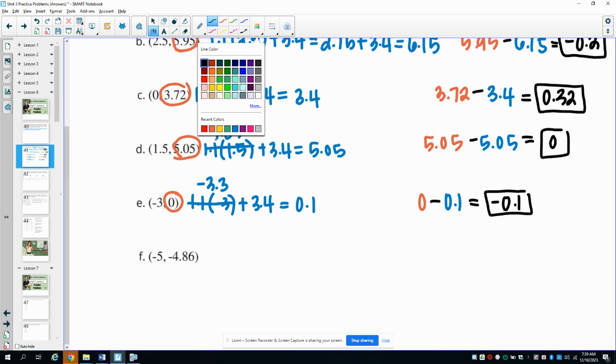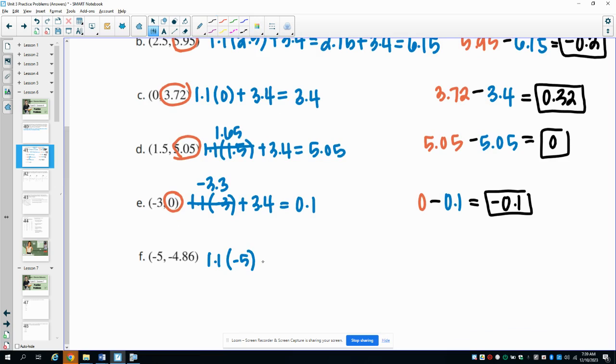Finally, part F, 1.1 times negative 5 plus 3.4 gives us negative 5.5 plus 3.4, which equals negative 2.1. Our actual value was negative 4.86, and then we'll subtract our estimate of negative 2.1, which gives us negative 2.76 for our residual.